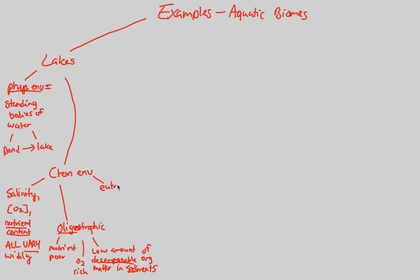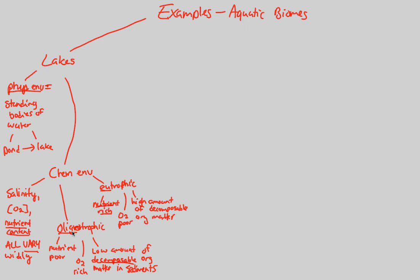In a eutrophic chemical environment, which is the exact opposite, we have a nutrient-rich biome. Consequently, it will be oxygen-poor because all the living organisms use lots of oxygen to break down the abundant nutrients — basic cellular respiration. For that reason, we also have a high amount of decomposable organic matter, all tied to the nutrient-rich trophic characteristic of this environment.